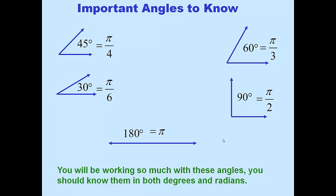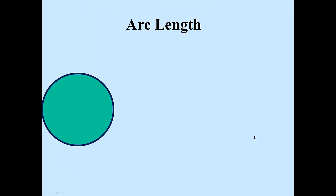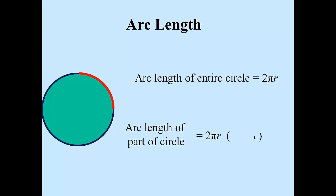One application of radians is to compute arc length. The arc length of an entire circle is 2π times the radius, from the circumference formula. To find the arc length of part of a circle, take 2πr times the fraction of the circle described by theta divided by 2π. The 2π's cancel out, and you're left with s = rθ. That's the formula for the arc length of a circle.